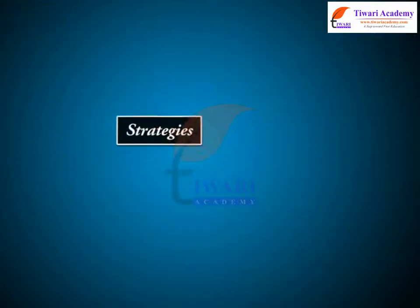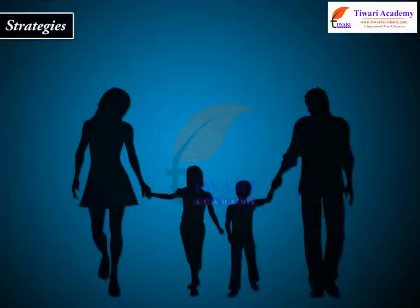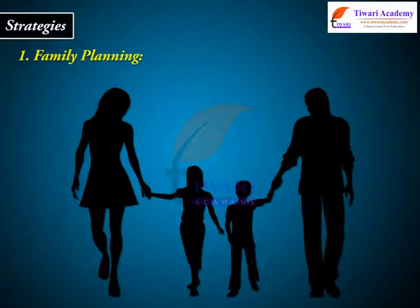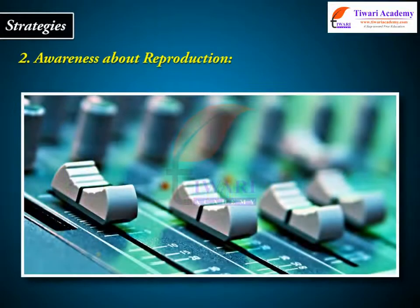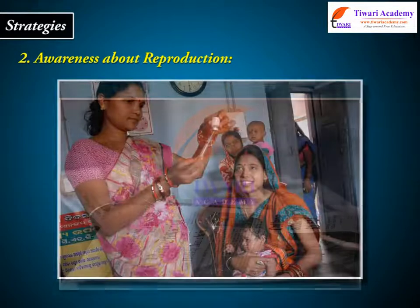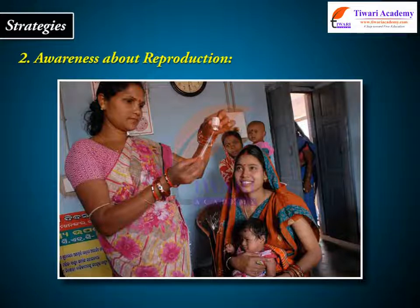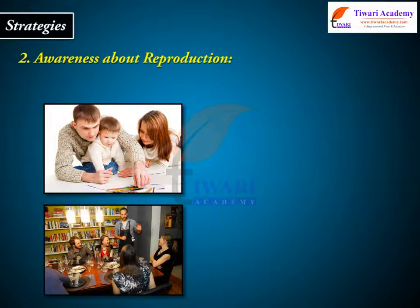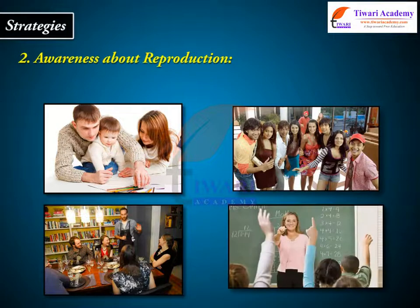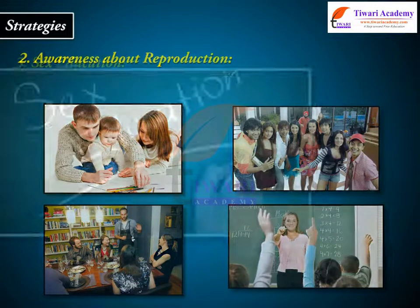Strategies: 1. Family planning — it was initiated in 1951. 2. Awareness about reproduction — audiovisual and print media, as well as governmental and non-governmental agencies, are doing a good job to create awareness among people about reproduction in humans. Parents, close relatives, friends and teachers also have a major role in giving the above information.